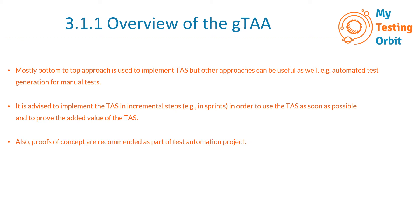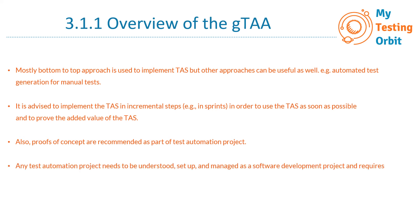Proof of concept is recommended as part of a test automation project. Whenever we are automating a project and have come up with a new framework or test automation solution intended for all projects in the same product line, it is always advised to take a pilot project, see what works and what doesn't, so that it can act as a proof of concept. Any test automation project needs to be understood, set up, and managed as a software development project, requiring dedicated project management.